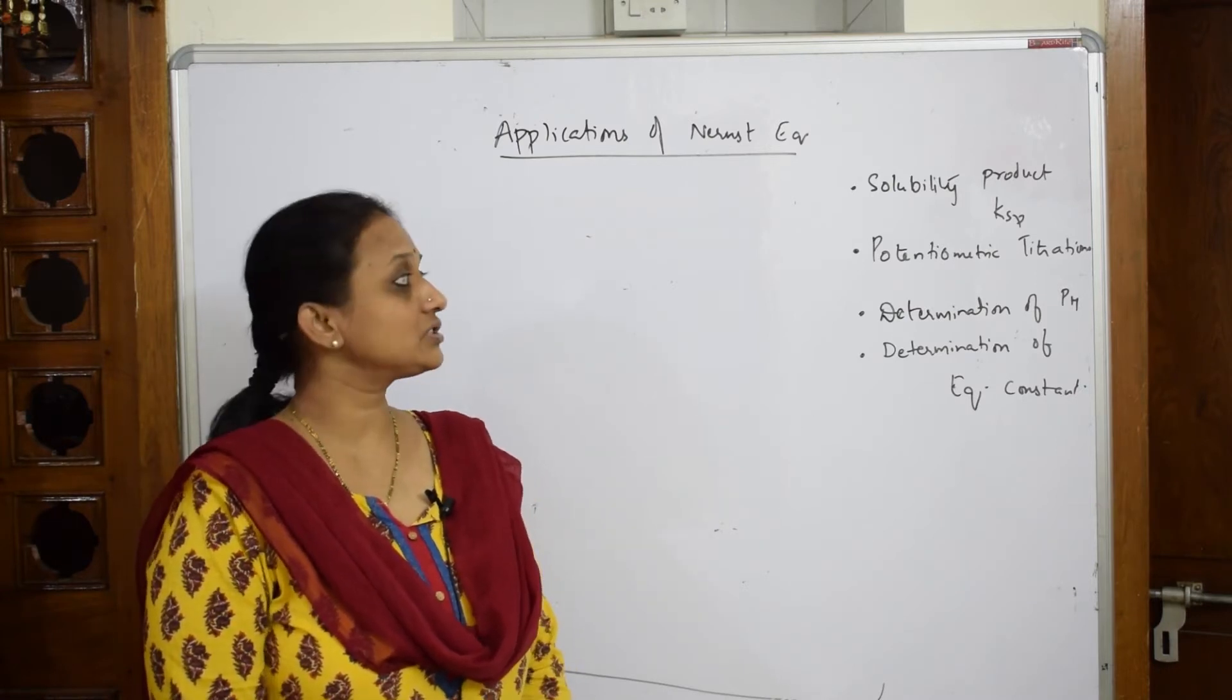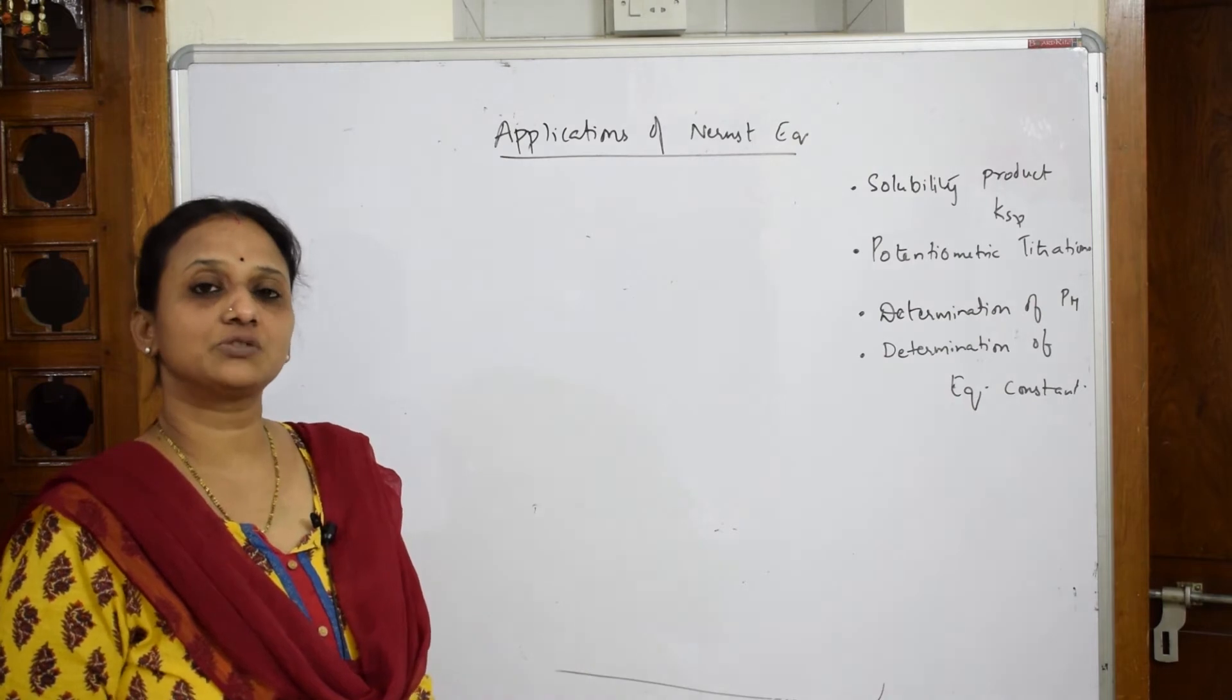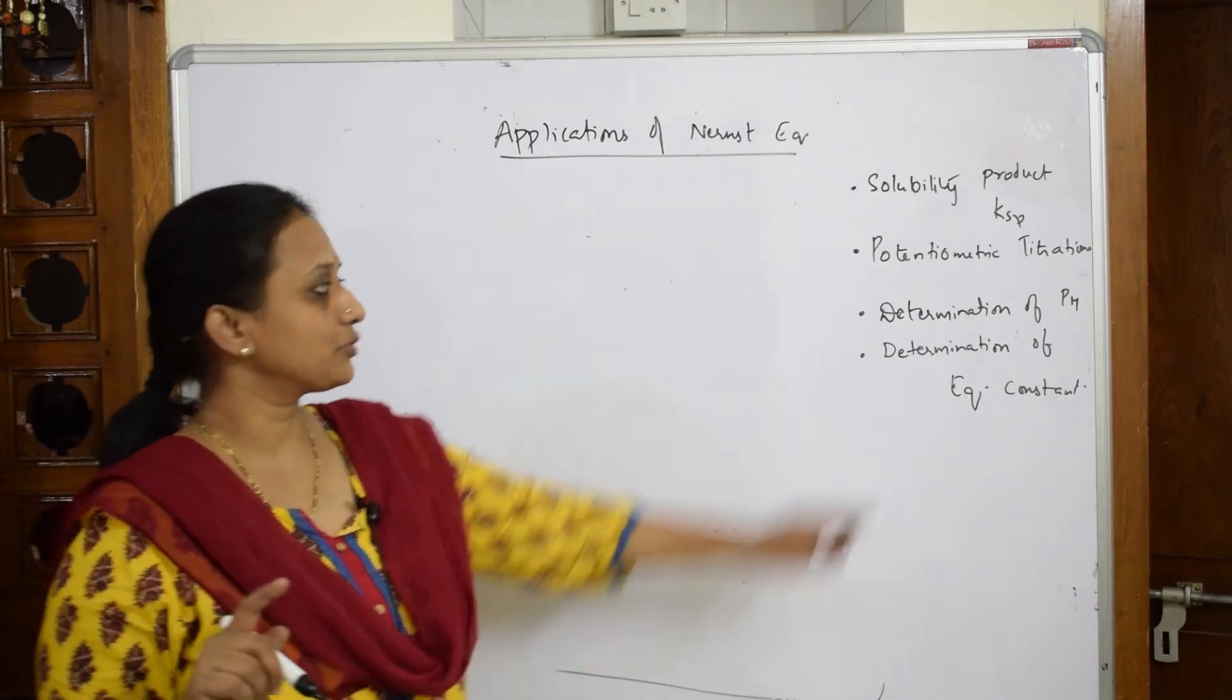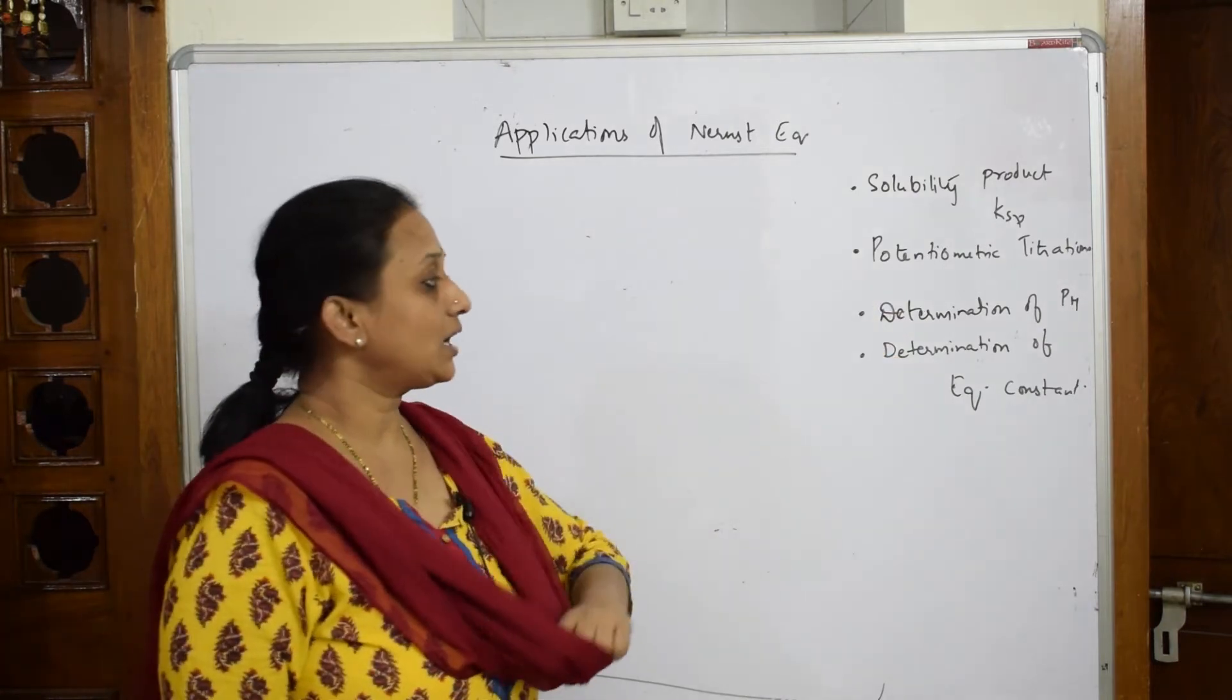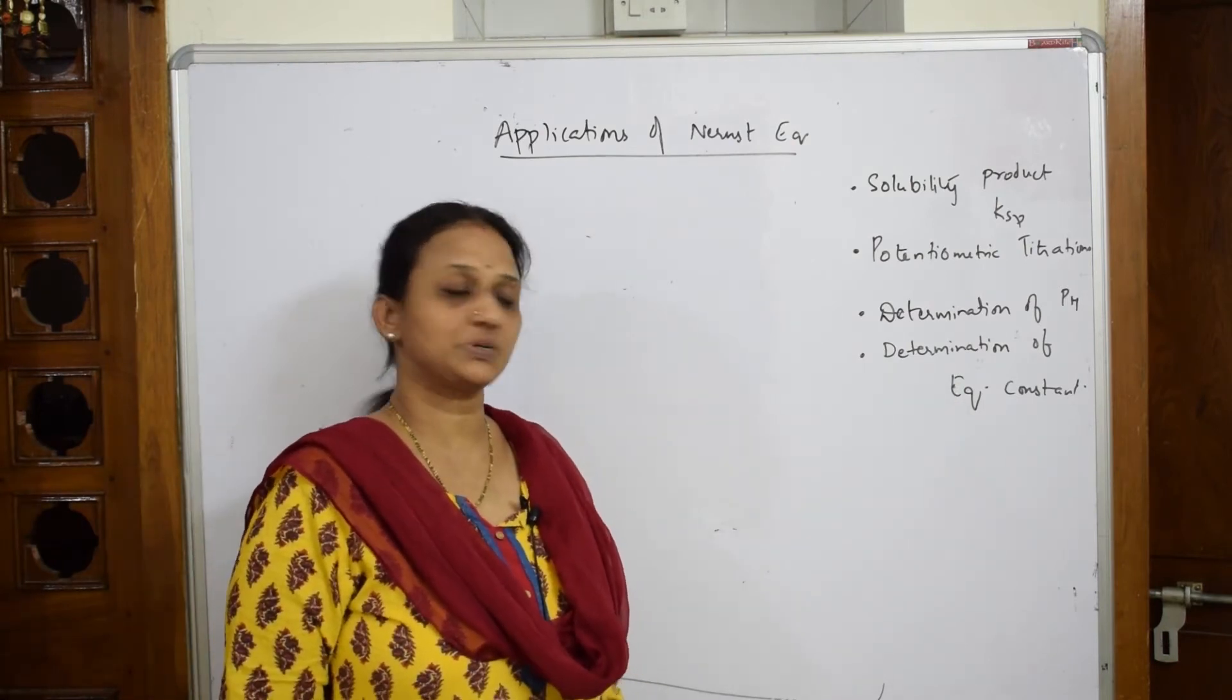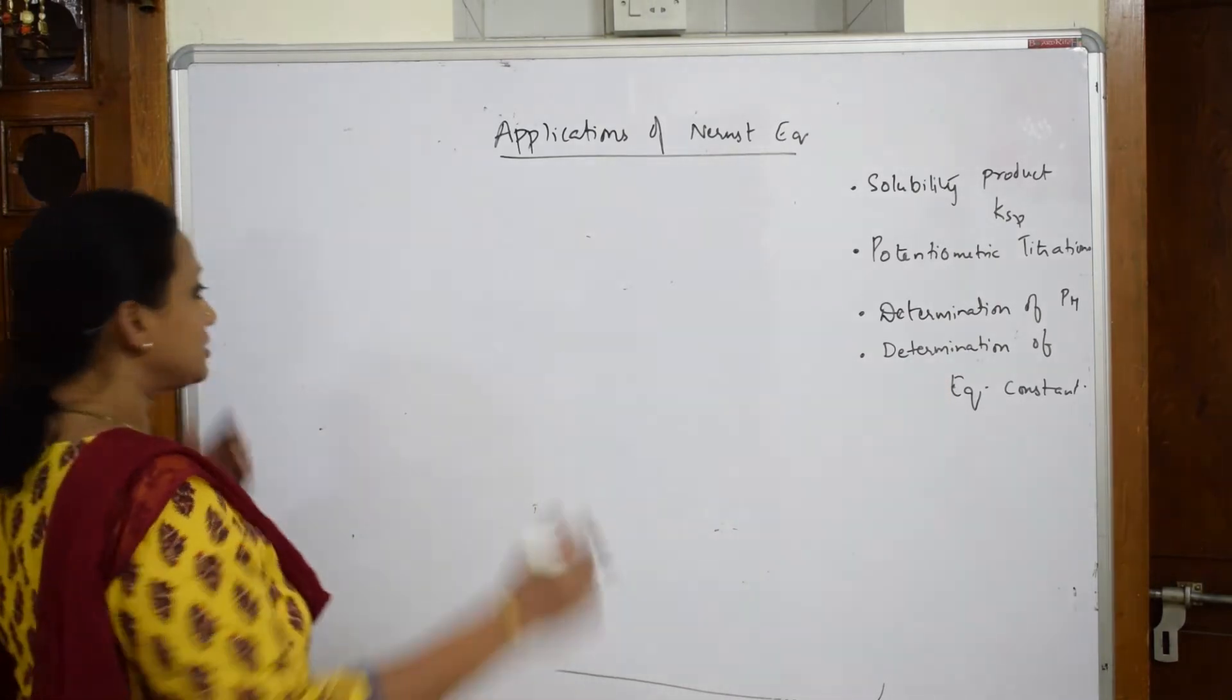Basically your Nernst equation is used to determine the solubility product and also it is used in potentiometric titrations where you are supposed to find out the unknown ion which you are titrating. It is also used to determine the pH, but for your syllabus you have determination of equilibrium constant. So your NCERT has picked up this one to explain the application of Nernst equation. So let us write applications of Nernst equation.